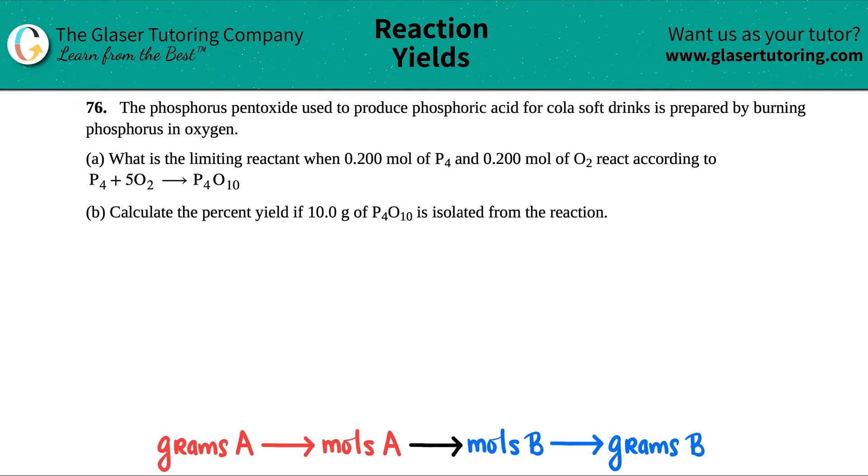Number 76, the phosphorus pentoxide used to produce phosphoric acid for cola soft drinks is prepared by burning phosphorus in oxygen. Fun fact, letter A, what is the limiting reactant when 0.200 moles of P4 and 0.200 moles of O2 react according to this equation?